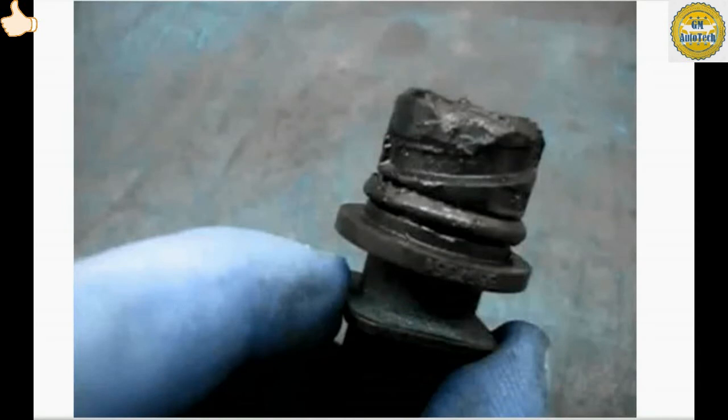A positive crankcase ventilation PCV valve can become clogged with sludge and trap blow-by gases in the crankcase. This contaminates the oil and promotes additional formation of deposit material. This can cause plugged oil rings, excessive oil consumption, rapid ring wear due to sludge buildup, and ruptured gaskets or seals due to crankcase pressurization.